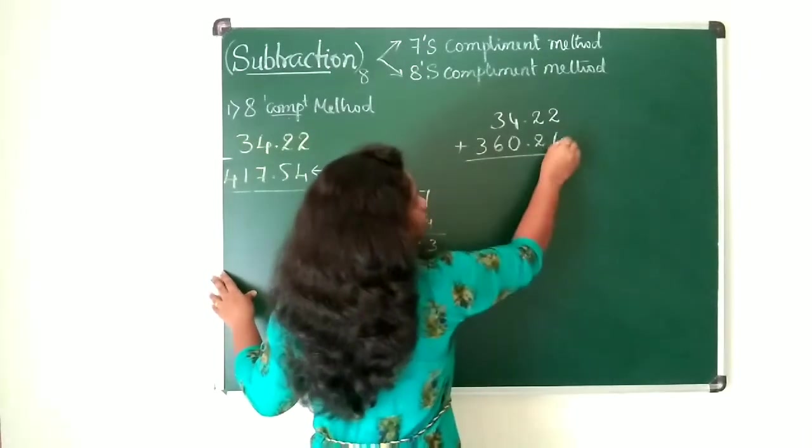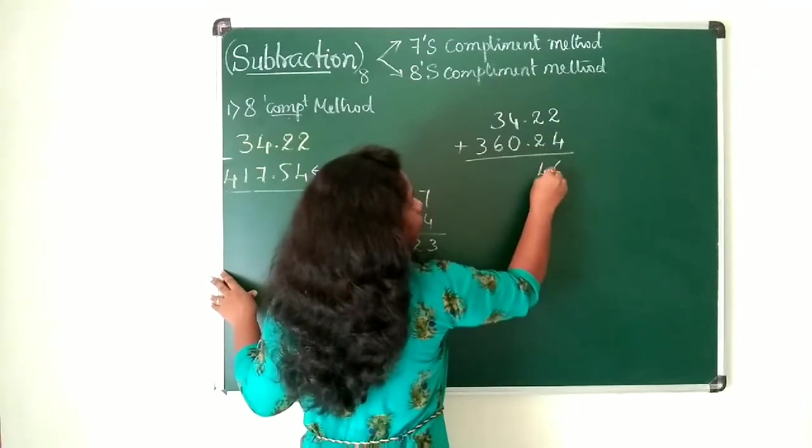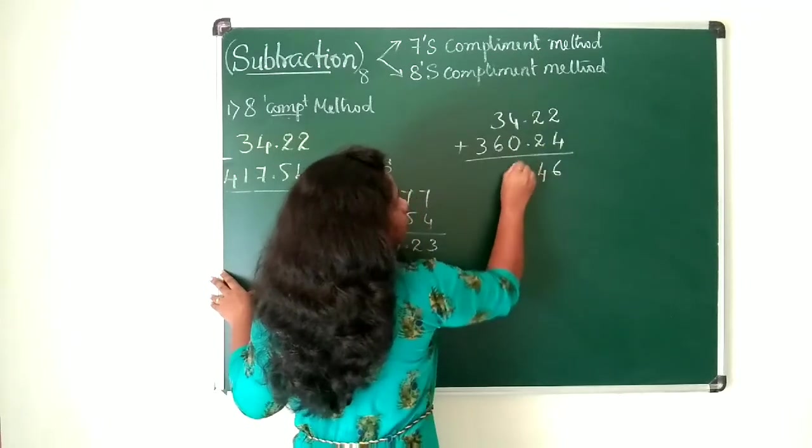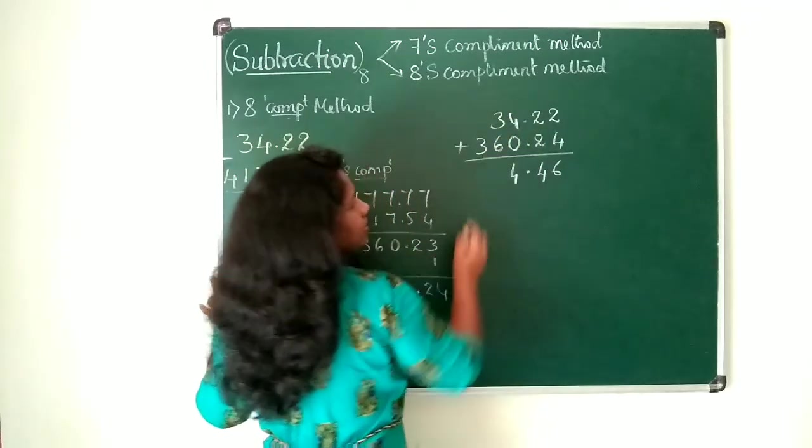Add this: 2 plus 4 is 6, 2 plus 2 is 4, 4 plus 0 is 4.